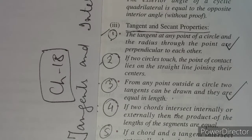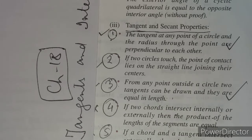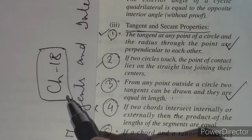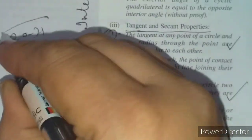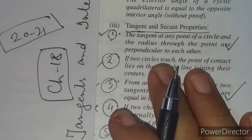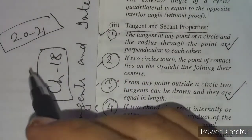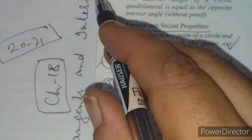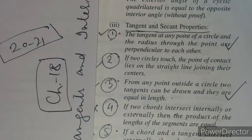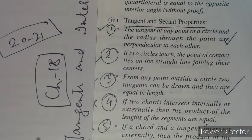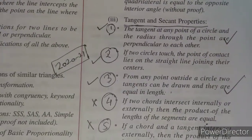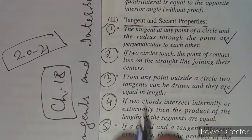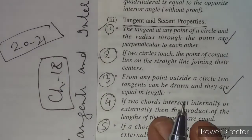Hello friends, welcome to my channel Life's Calculations. As you all know, some changes have been introduced in the ICSE Maths syllabus for Class 10 for the session 2020-21. In this regard, I am going to discuss the internal changes made in Chapter 18: Tangents and Intersecting Chords. I am referring to the syllabus written in the book Concise Mathematics for Selena Publications.